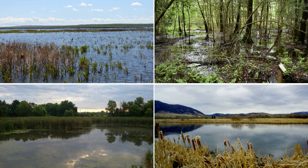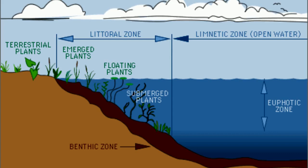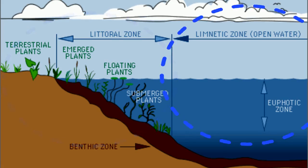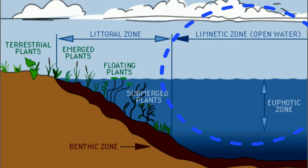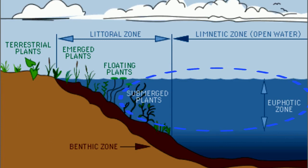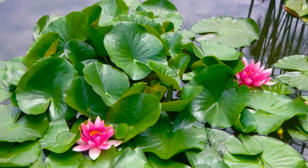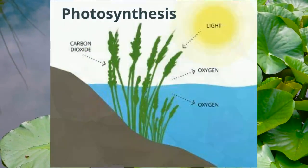Depending on where you live, wetlands can look very different and they may be called different things like a swamp, bog, or fen. All bodies of water have different zones or areas. The littoral zone is the shallow area near the shoreline, while the limnetic zone is the open waters. The euphotic zone is water near the surface — it receives sunlight enabling plants to photosynthesize. The bottom of the wetland is called the benthic zone, where all the mud and sediment is and bottom dwellers live. Most freshwater plants are found in the euphotic zone and in the littoral zone, close to the shoreline.